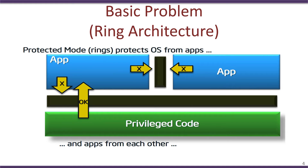The heart of the problem is the ring architecture adopted by all processors and operating systems. In the x86 ring architecture, there are multiple rings from ring 0 to ring 3. The operating system runs in ring 0, the privileged code, and creates an environment for applications running in ring 3. The OS can access the memory and data of all applications, while applications are isolated from each other through virtual memory and page tables.